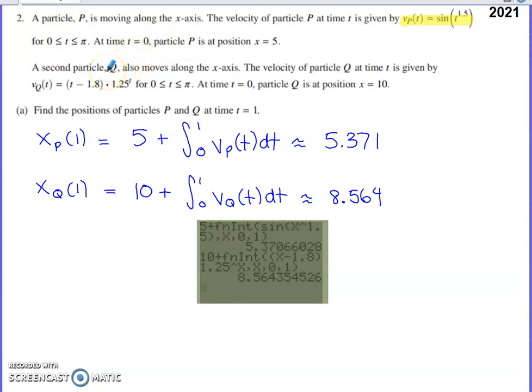They do something similar for particle Q. A different velocity function for particle Q also holds from zero to pi. And then they give us the initial position of particle Q as well. So at time zero, particle Q is at x equals 10.